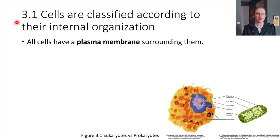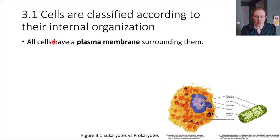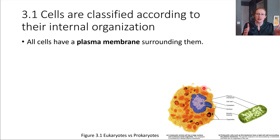Let's get started with the classification of cells. Cells are classified according to how they're organized inside. What do all cells have in common, regardless of their internal organization? Something they all share is a plasma membrane that surrounds them, providing a boundary and separation between the cell and the external environment. In the picture here, we have two very different types of cells, but each one has a plasma membrane around the outside that keeps its contents separated from the external surroundings.